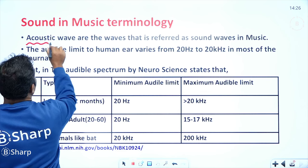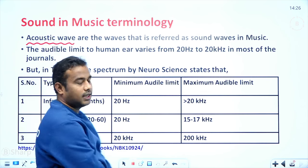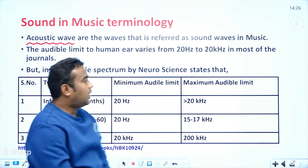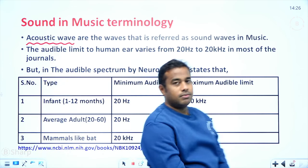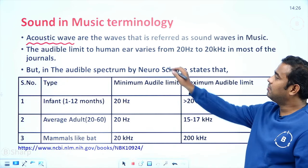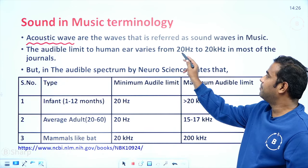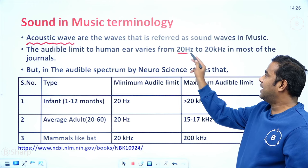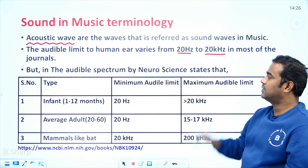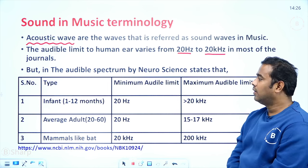When looking at the acoustic wave, the audibility limit for the human ear generally varies from 20 hertz to 20 kilohertz. This is the normal range that most journals agree upon.